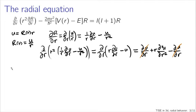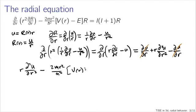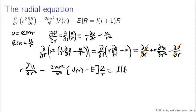Our overall equation at this point looks like r times the second derivative of u with respect to r, minus 2m r-squared over h-bar-squared times V(r) minus E, times R — where R is u/r — is equal to l(l+1) times u/r, again substituting in u/r for capital R.